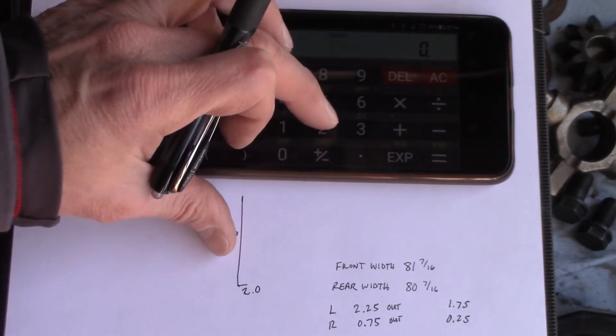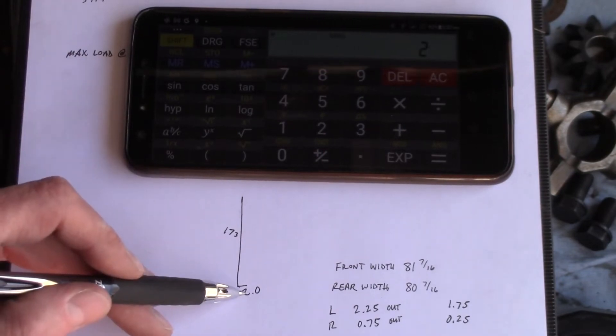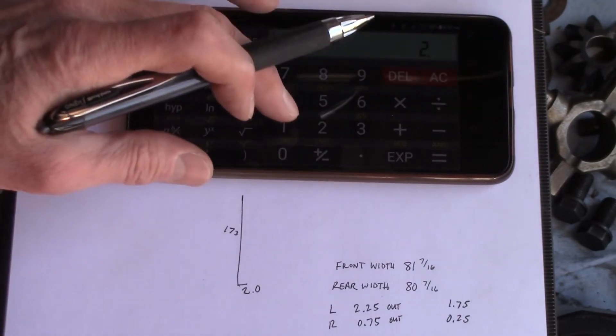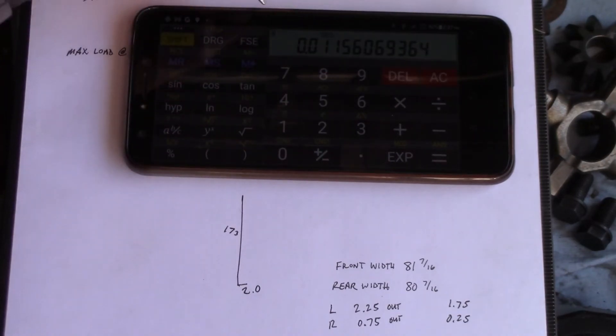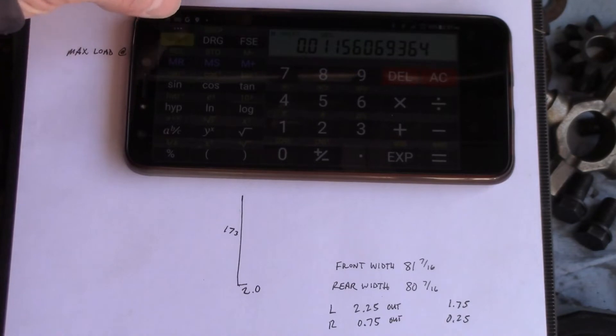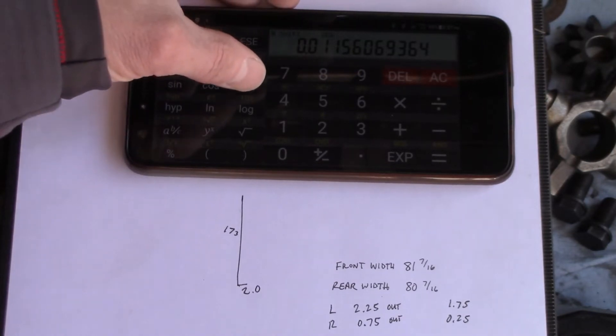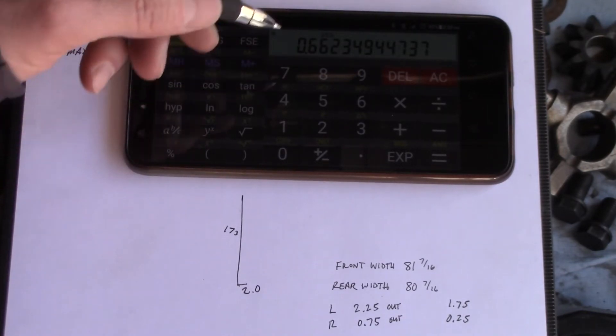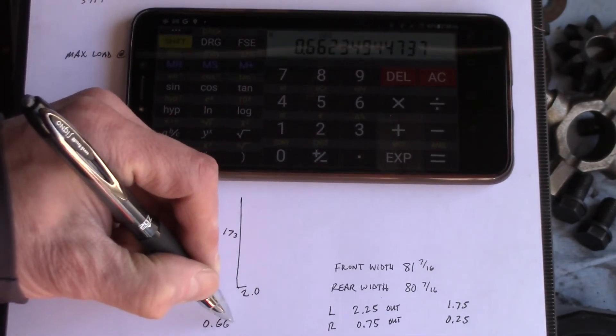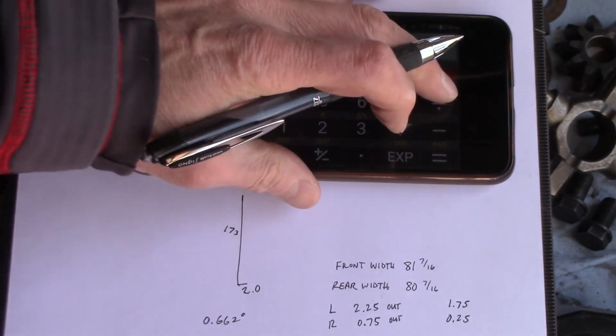What we'll do here is tangent is opposite over adjacent, so we'll say 2 divided by 173 is 0.015, and let's calculate the inverse tangent of that. So we'll go 0.662 degrees.